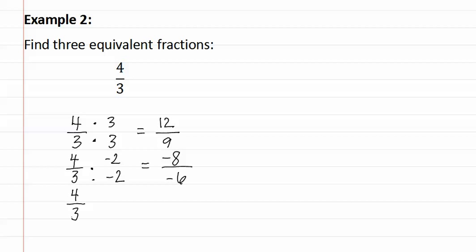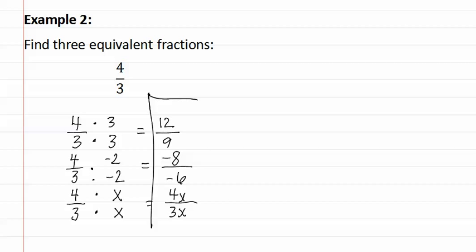We can also multiply four-thirds by a variable. A variable is a letter that represents a value. Let's say we picked the letter x. If I have four times x, I would get four x, and three times x, I would have three x. All of these are equivalent fractions to four-thirds.